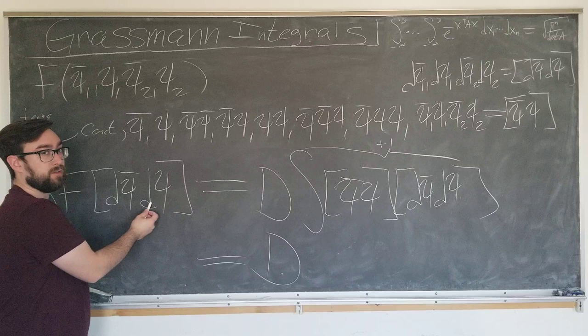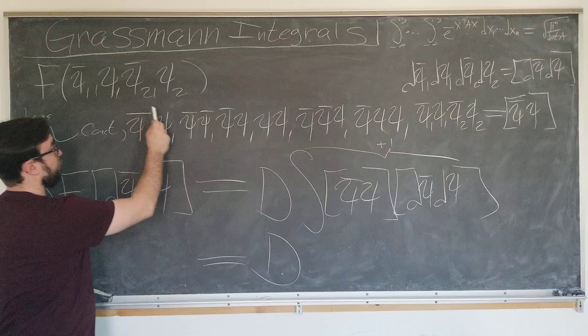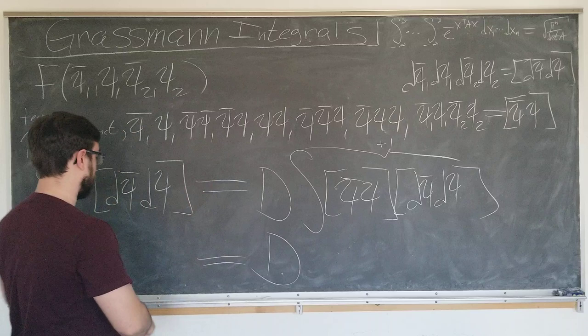So we know this because we learned in the last video that we must saturate the integration measure, which contains four variables. This term only has no variables, one variable, two, three, only the most important one has four variables, so that saturates the integration measure.